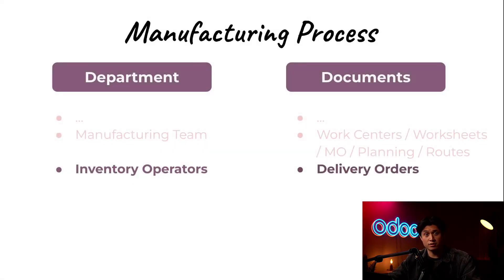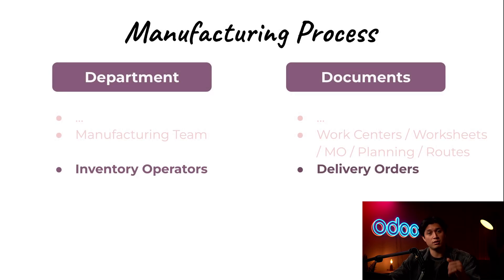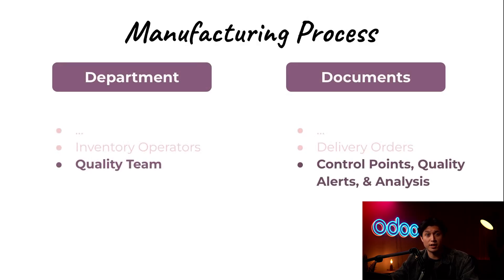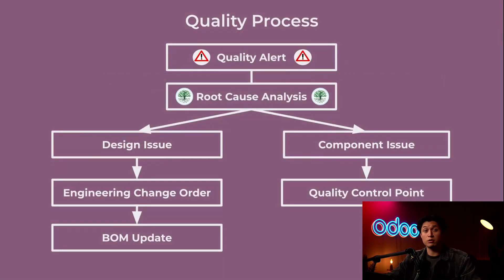But as business owners know, the story doesn't always end when the package arrives at the customer's doorstep. If they find any issues with the product, the customer support team will hear about it. Once the item is returned, the quality team can inspect it and begin a new workflow to improve or repair the product depending on what's needed. This entire post-delivery process is tracked in real time, so nothing falls through the cracks and customers stay informed.